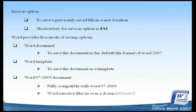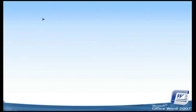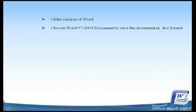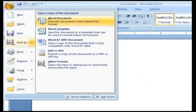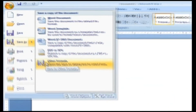Word can save files in over a dozen different formats. If you're sharing the file with someone who's using an older version of Word, choose Word 97-2003 to save the document in .doc format. You have to decide yourself in which format you are going to save your file. Find Add-ins for Other File Formats — learn about add-ins to save to other formats such as PDF or XPS. Other Formats — used to open the Save As dialog box to select from all possible file types. You can select any mode of saving option which suits your requirements.